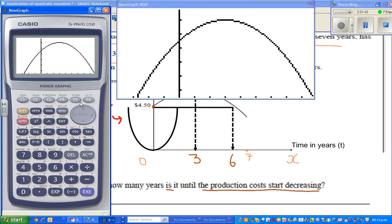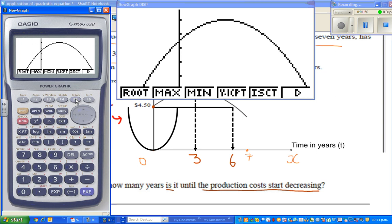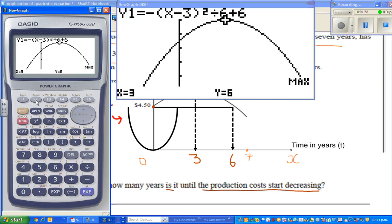Now, I told you this has the vertex of 3 comma 6. And this point is called the maximum. So under calculator, in graph calculator, if you go G-solve and press maximum, that is 3 comma 6. That's your maximum.